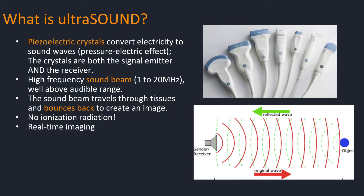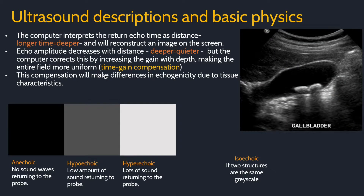This modality is non-ionizing and real-time. To make an image, the computer makes a few assumptions. First, it assumes that the longer the return echo time, the deeper the echo was — longer time means deeper. It also assumes that echo amplitude, or loudness, will decrease as the echoes are further away. However, we want to look at a uniform field, so the computer will correct for this by increasing image gain with depth, making a more uniform field.